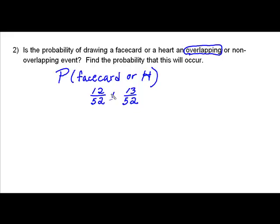In the case of or situations, we add the individual probabilities. However, because it's an overlapping event, we have to figure out how many cards would be counted twice if we didn't make some adjustment.